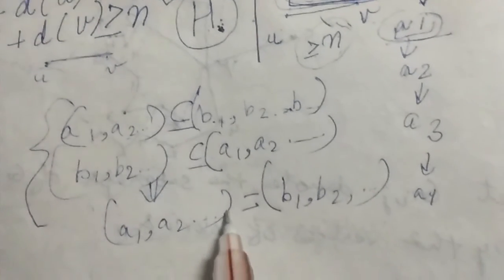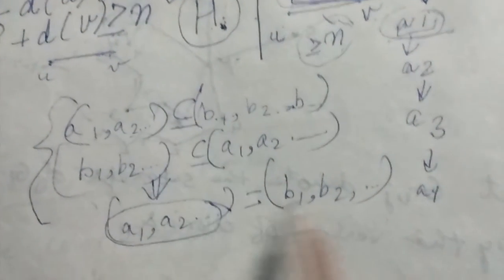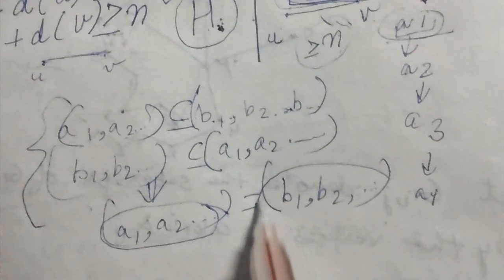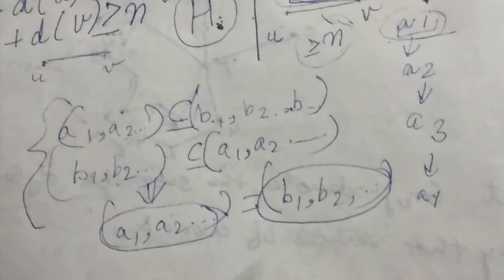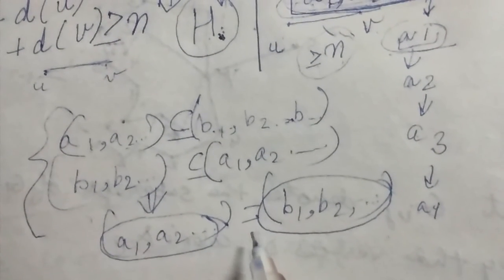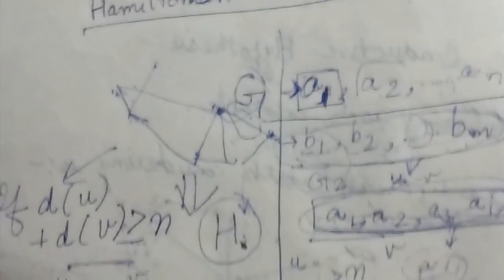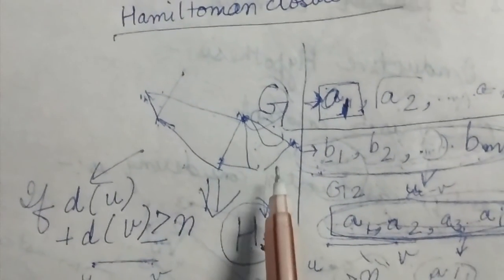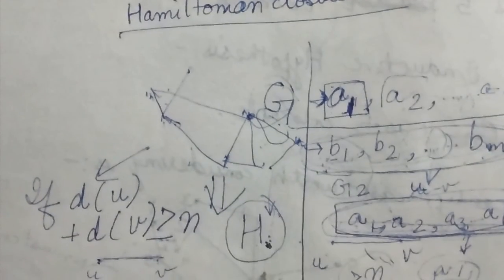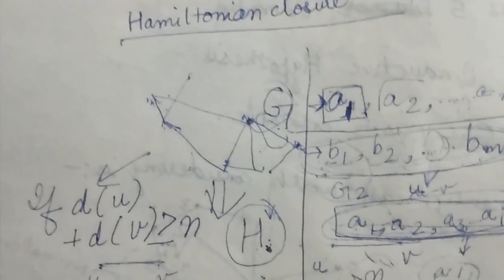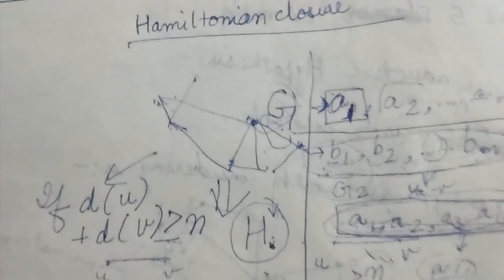So it doesn't matter in which order I add my edges, but at last I will end up adding the same set of edges, and hence I will get the same Hamiltonian graph. So I have proved that the Hamiltonian graph obtained thus, that is the Hamiltonian closure, is a unique graph. Thank you, friends.